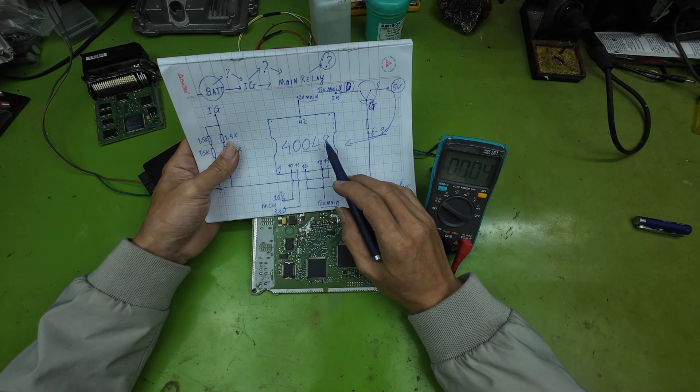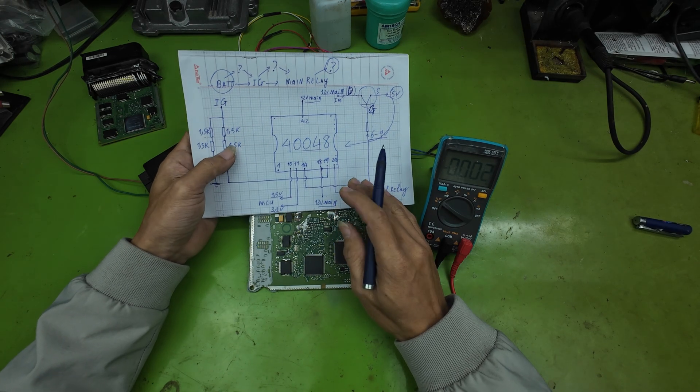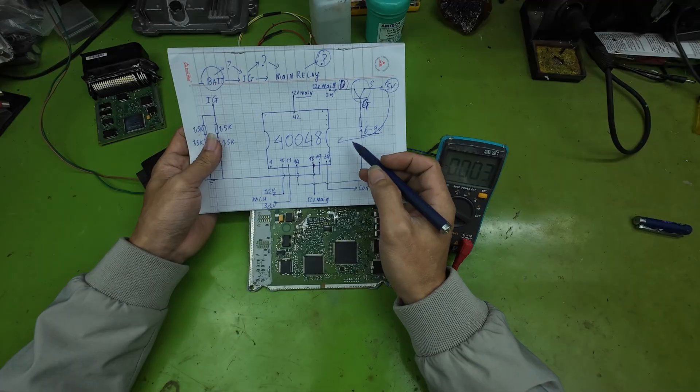If the 1.5 volts and 3.3 volts rails are missing, then IC4048 is likely defective, or those rails are shorted.